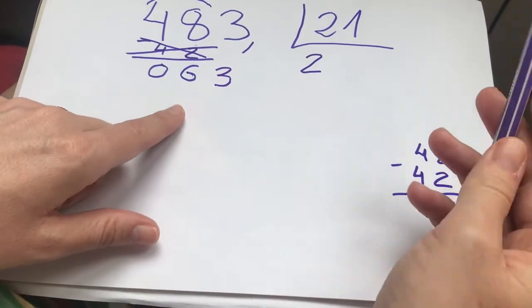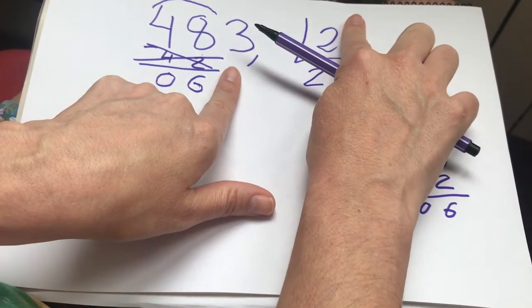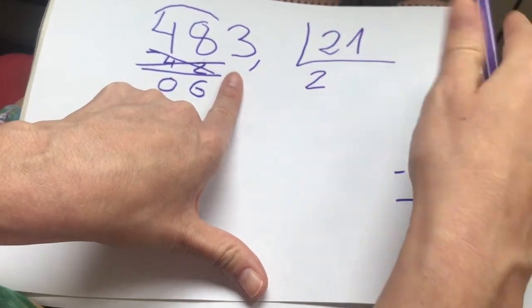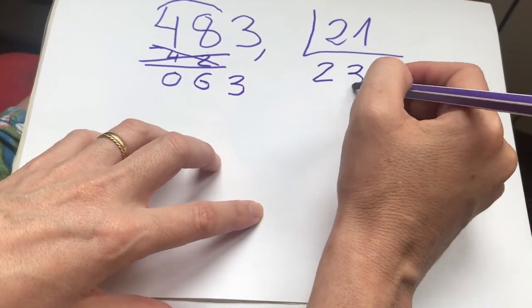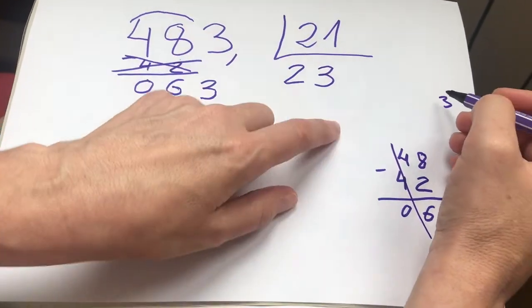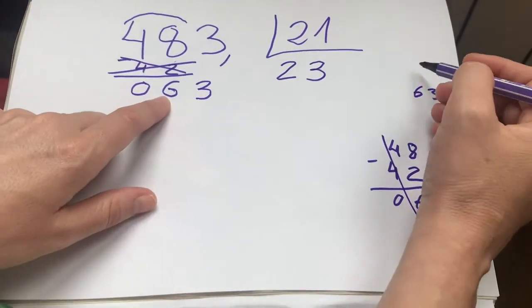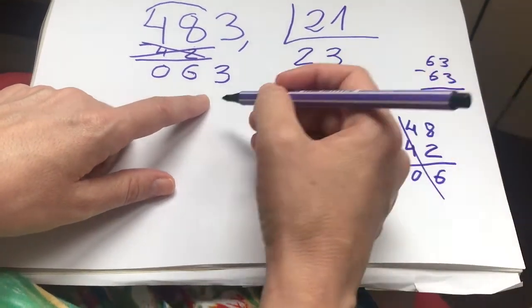Ahora haría lo mismo. El 3 lo tapo y el 1 lo tapo. 6 entre 2. Voy a probar a 3. 3 por 2, 6. Podría hacerlo aquí. 3 por 1, 3. Y 3 por 2, 6. Tengo que restar a 63, 63. Con lo cual me daría 0.